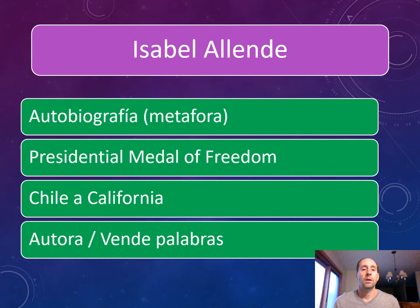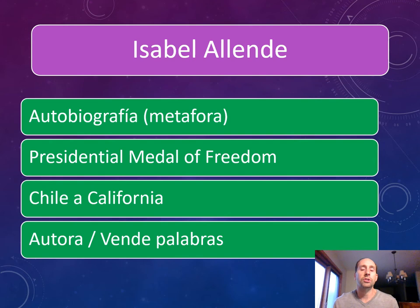Isabel Allende es una autobiografía o una metáfora de su vida. Ella ganó the Presidential Medal of Freedom. Ella nació en Chile y ahora vive en California. Ella es una autora, una persona que vende palabras. This story is an autobiography in a different format — it's a metaphor for her life. She won the Presidential Medal of Freedom, was born in Chile, and moved to California for political reasons. She's an author, someone who sells words, just like the protagonist in the story.